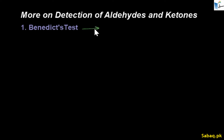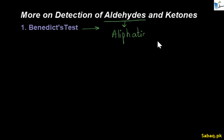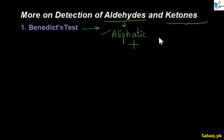What can this test detect? It detects aldehydes — specifically aliphatic aldehydes, not aromatic aldehydes. Benedict solution is used in the Benedict test. The test is positive for aliphatic aldehydes and negative for aromatic aldehydes. For ketones, this test is negative.